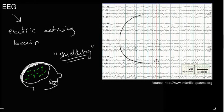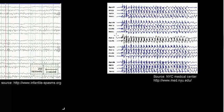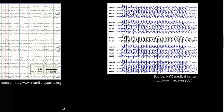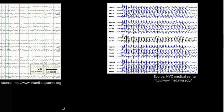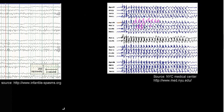Here is the EEG of a healthy patient, brought to us by the Infantile Spasm Organization. Also very interesting is an image from the NYC Medical Center. What you see in that image are distinct, well-organized patterns — and you might think, oh, this looks good. But the answer is no: this is the EEG of an epileptic seizure of a 15-year-old patient. You can see that all the respective electrical conductivity measurements are in line with each other.